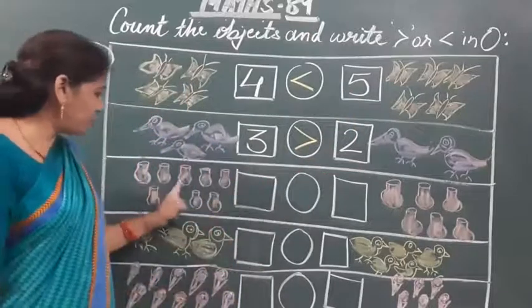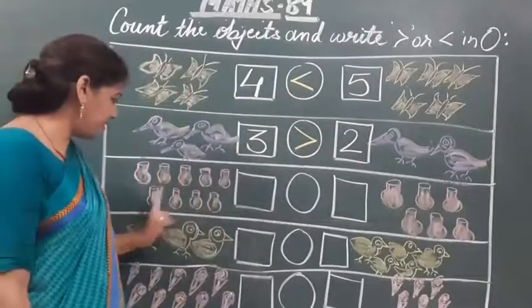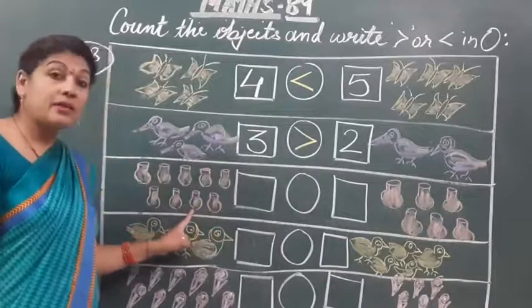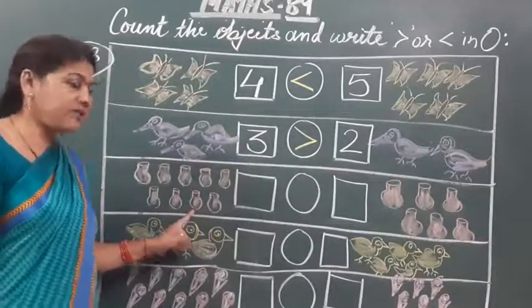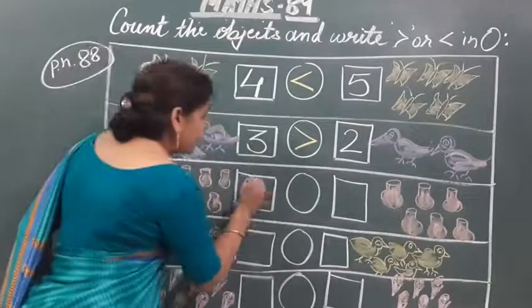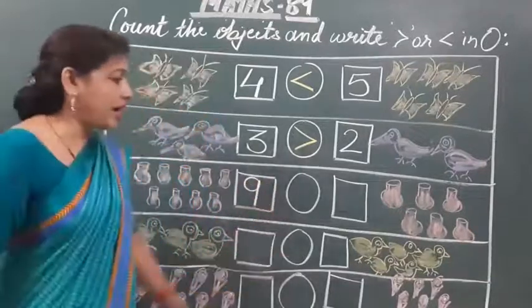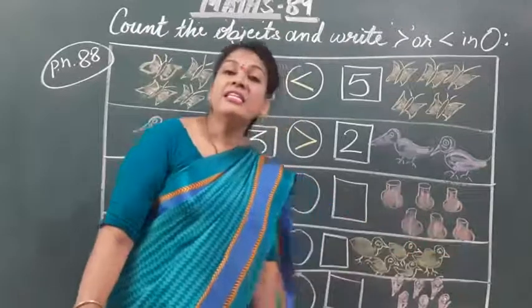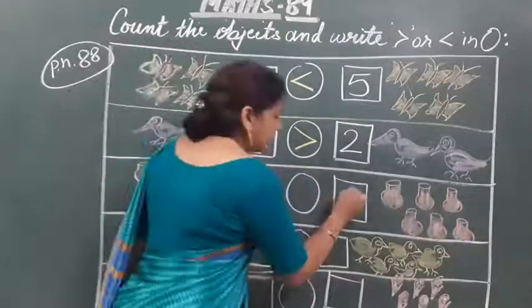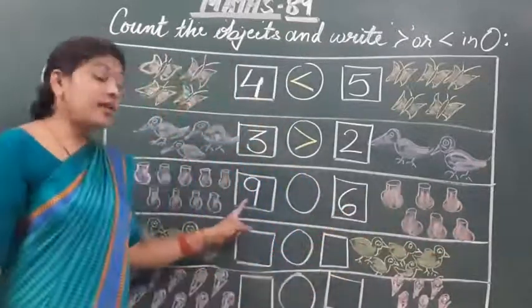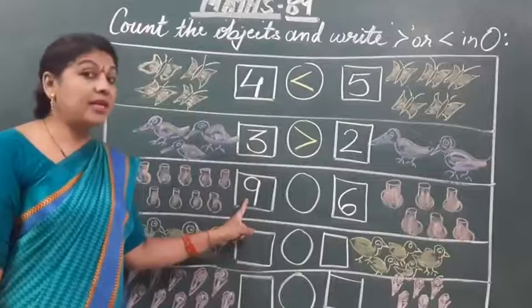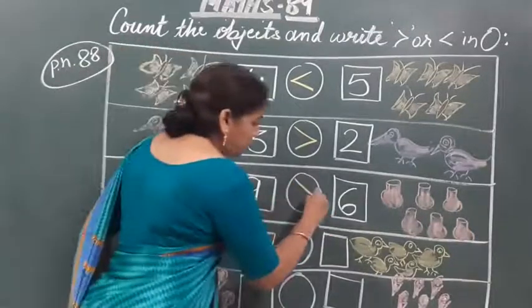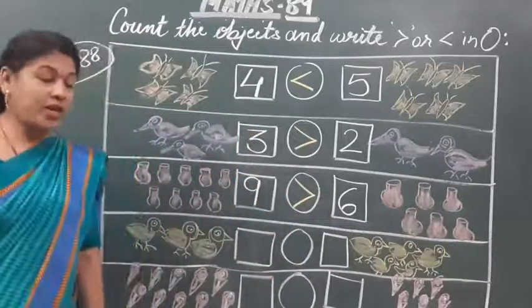Now here: one, two, three, four, five, six, seven, eight, nine — nine. How many? Nine ports are given there. Then we will write the number nine. And on this side: one, two, three, four, five, six — only six parts are given there. Then nine is greater than six, so we will put the greater than sign.